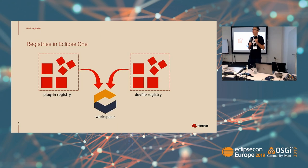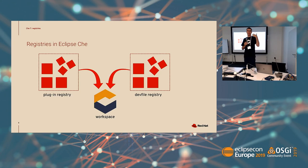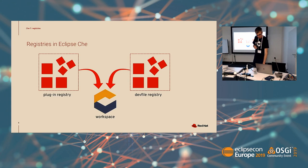When I speak about the dev file, I said that plugins are used from the plugin registry. In Che 7 you have two new concepts: the plugin registry and the dev file registry. In the dev file registry you register all the workspaces you want — for example a Python dev file, a Java dev file, etc. All these dev files reference plugins that live in the plugin registry.